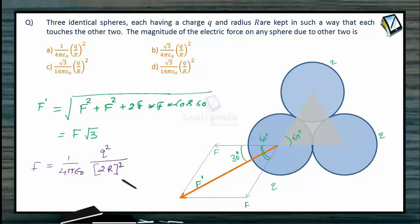So 2 square is 4, 4 into 4 is 16, and here it is root 3. So F dash is going to be q square under root 3 divided by 16 pi epsilon naught r square.